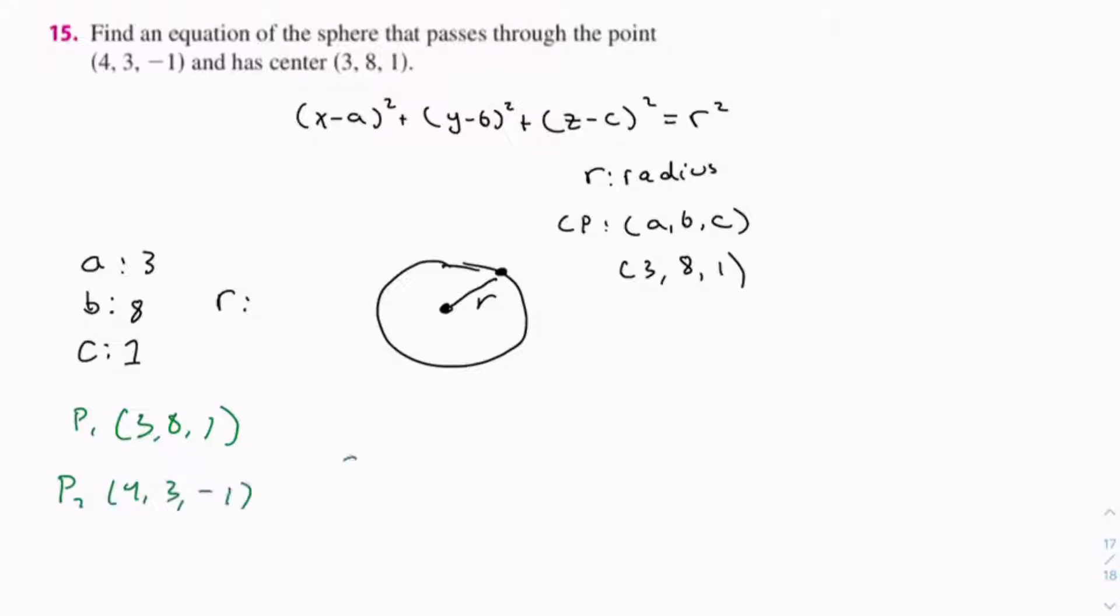The distance between these two points equals (4-3)², plus (3-8)², plus (-1-1)².